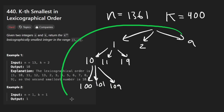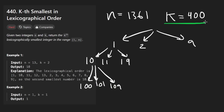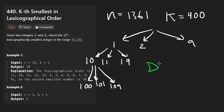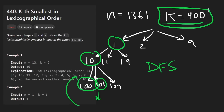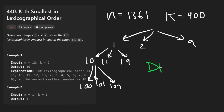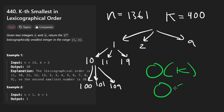We could traverse through this tree using DFS, similar to yesterday, and once we get to the 400th number — where this is the first, this is the second, and this is the third — we'd return it. Clearly, in the worst case this is an O(k) algorithm, or O(n) in the worst case depending on k.